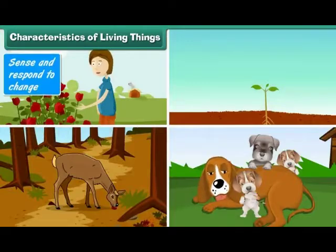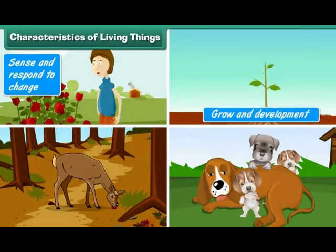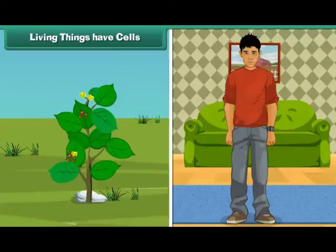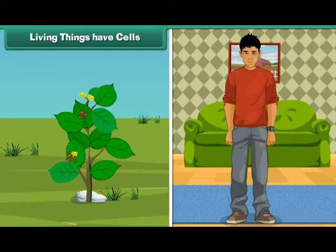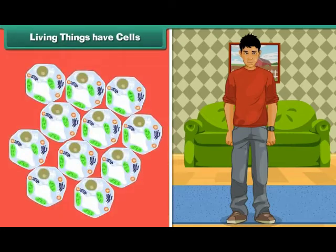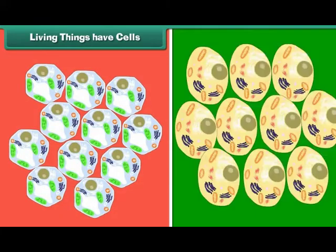Sense and respond to change, growth and development, give off waste, reproduce, and living things have cells. Each living being has a distinct individuality and cannot be broken into two or more independent parts. The body of a living being is made of one or more cells.